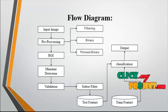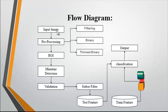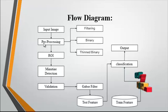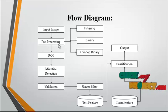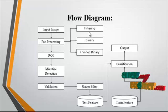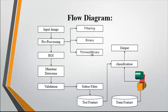Now we discuss about the flow diagram for the process. First, the input image is taken from the dataset. Then the input image undergoes the preprocessing step. In the preprocessing step we consider three major things: first is filtering, second is binary conversion, and third is thinned binary.